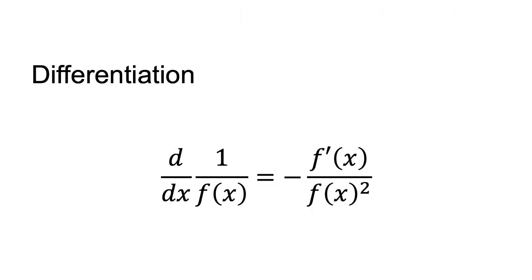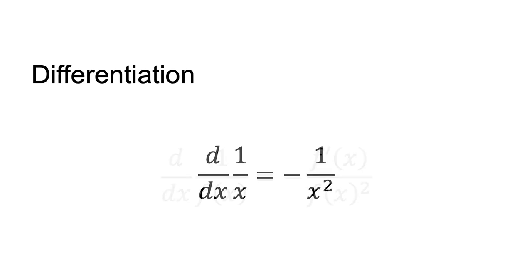The derivative of a fraction is d/dx 1/f(x) equals negative f prime x divided by f(x) squared. For example, d/dx 1/x equals minus 1/x squared.